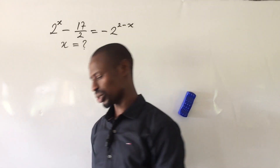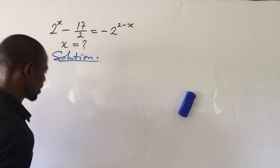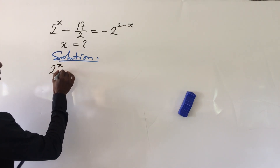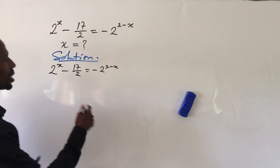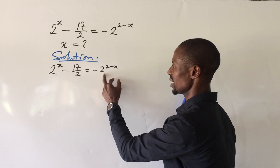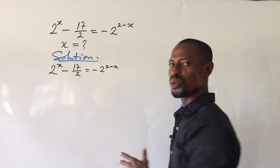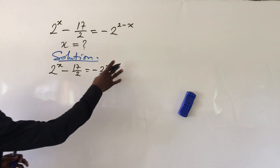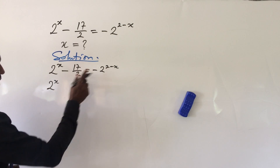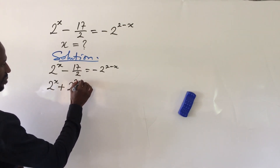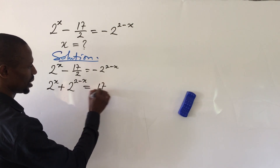Let's go into today's challenge. We write down our equation: 2 to the power of x, minus 17 over 2, equals negative 2 to the power of 2 minus x. The left-hand side carries a negative sign, and so does the right-hand side. We rearrange by bringing the right-hand side term to the left, giving us: 2^x plus 2^(2-x) equals 17 over 2.